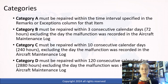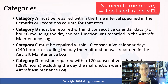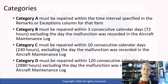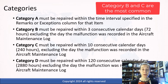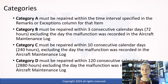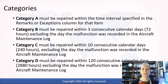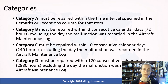MEL items do fall into categories. You wouldn't have to memorize these because they'll be listed in the MEL introduction. These items have a date range in which they have to be repaired. A lot of items you see in an MEL are category C, sometimes B. Basically, the day the item is discovered to not be working doesn't count, but then you have a certain number of consecutive calendar days. By a calendar day, we mean a 24-hour day — so if I find it at noon, I would have until midnight on the following day to call that one calendar day.